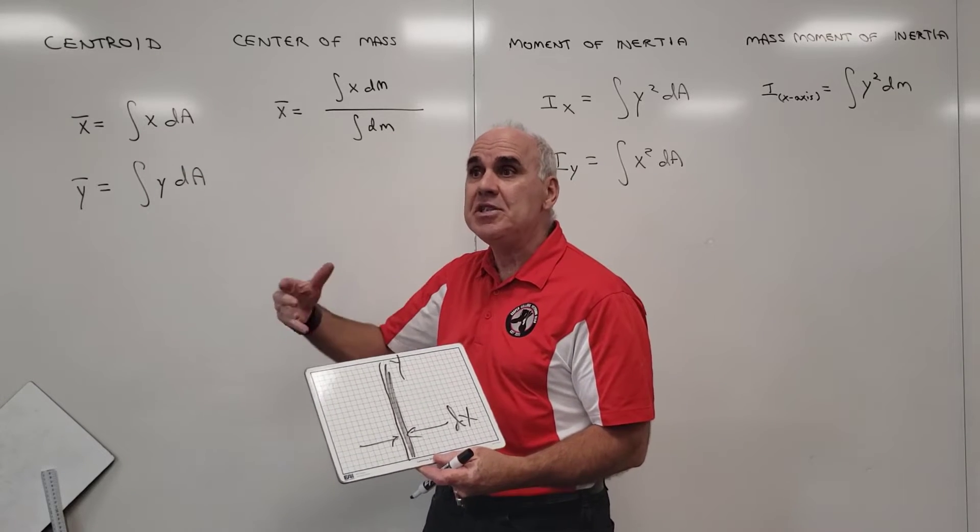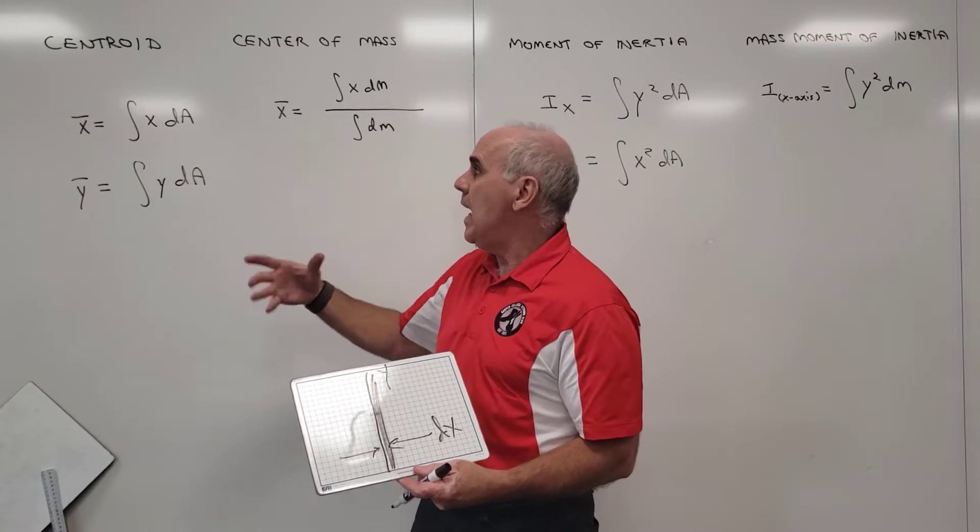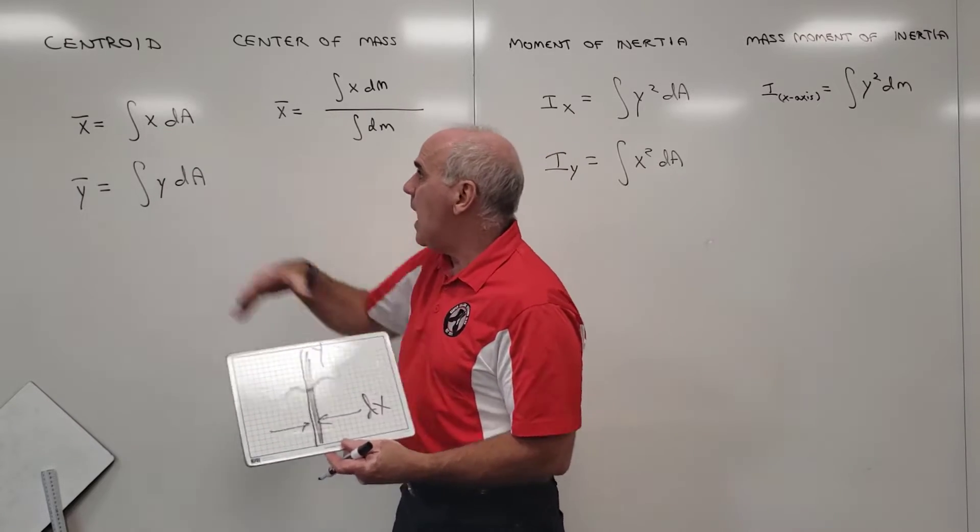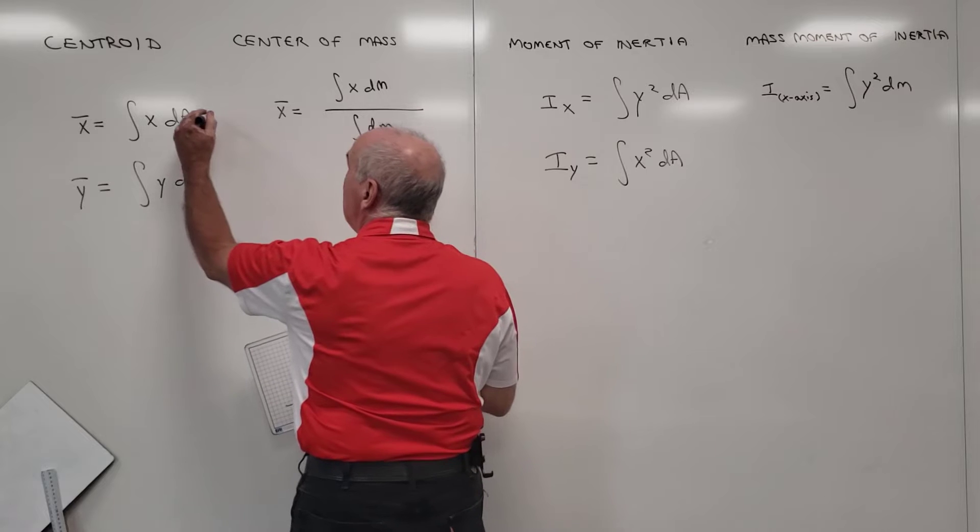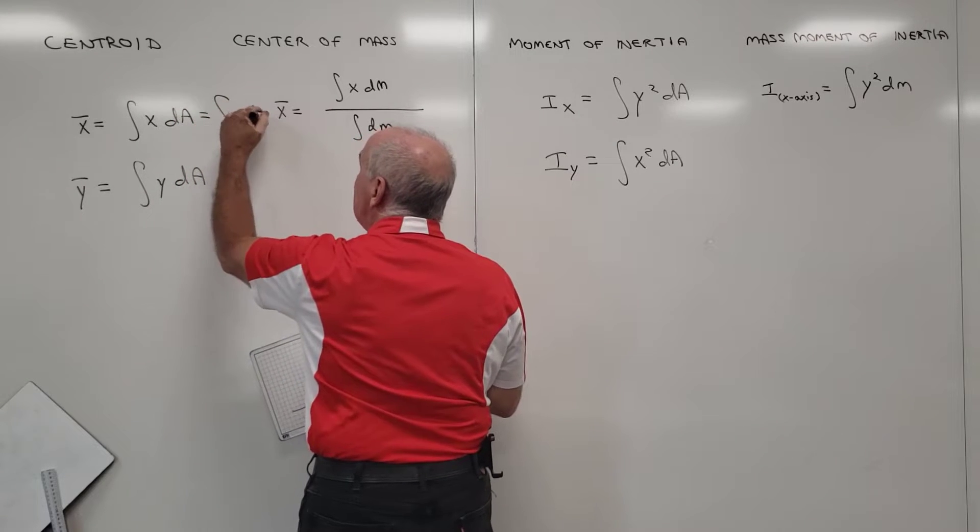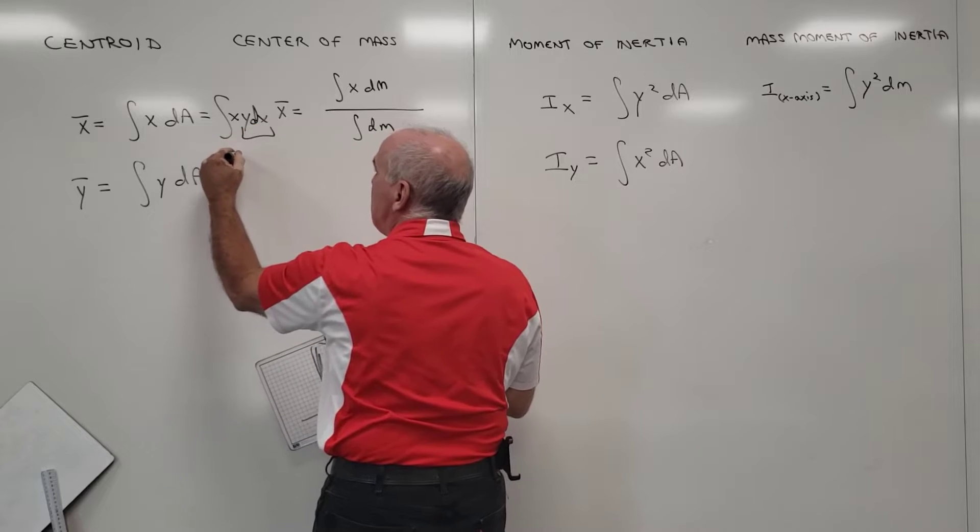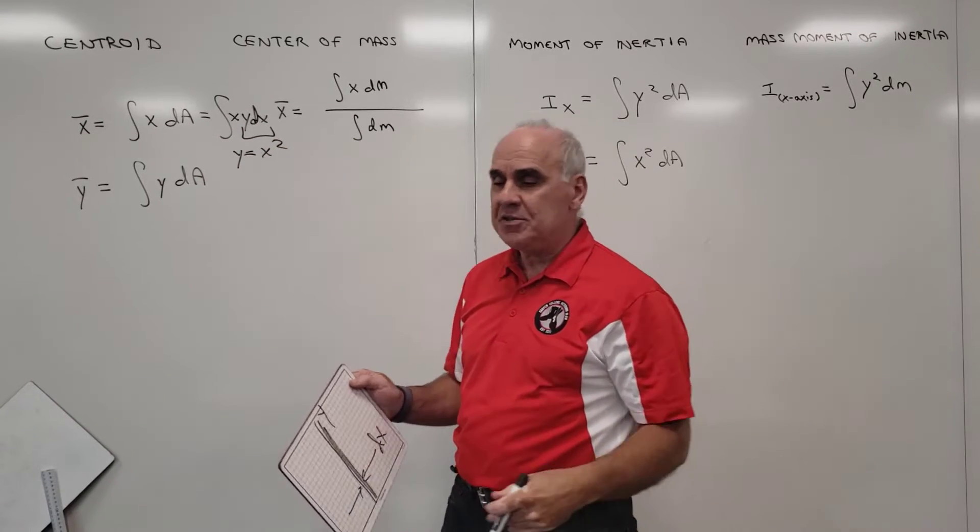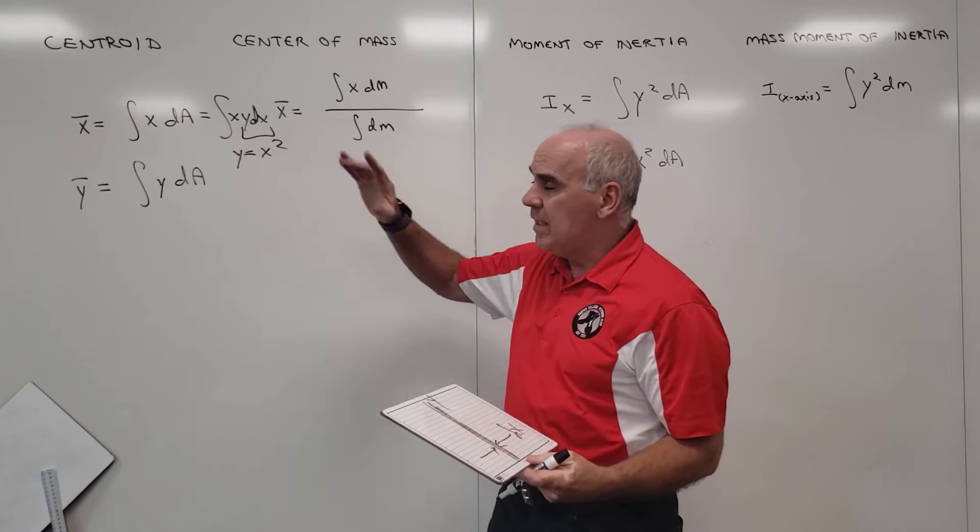And then x would be the position. We have to find what's the relationship between y and x. So maybe if this was a parabola, that dA would become y dx, and then if it was a parabola, y would equal x squared. So you'd have the integral of x cubed dA, dx.